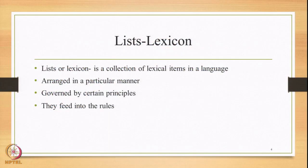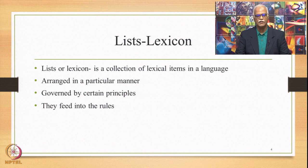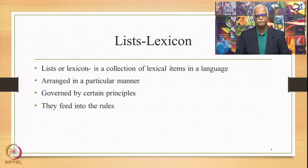There are lists or lexicon which are part of the system of Paninian grammar. These lists of words, lists of lexical items in a language, they form the core part of the Paninian grammar. These lists or the lexicon are arranged in a particular manner and they are governed by certain principles. These principles and these arrangements are made in such a way that they feed into certain rules, thereby explaining the usage that is part of the language.